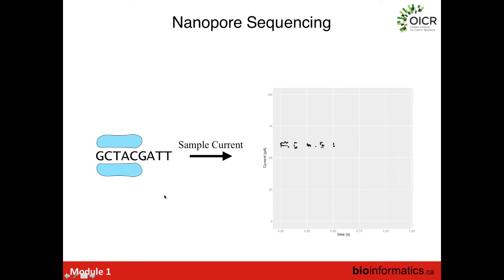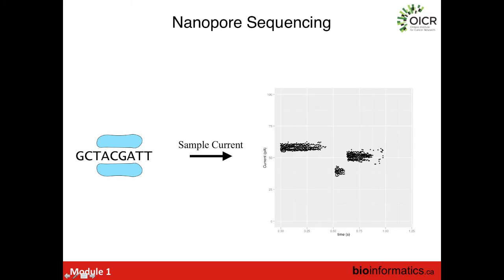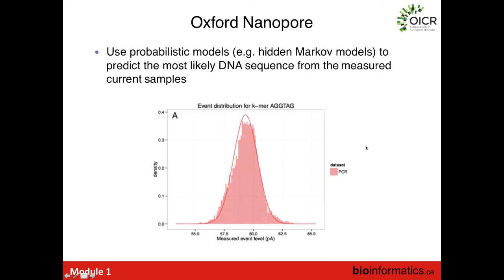At some point in time we have some sequence in the pore — say GCTAC — and we observe some current samples, around 60 picoamps. As DNA moves through the pore by a single base, the current signal changes — from 60 picoamps down to around 45 picoamps. As it moves again we see different current samples until we've read the whole DNA fragment. My group is involved in building probabilistic models of how much current we should observe depending on what the DNA sequence is in the pore. You sequence known DNA, build up a profile of how much current you observe when short fragments like AGG or TAG are in the pore, fit a Gaussian distribution, and say that when this sequence is in the pore we expect to see around 59 picoamps. We can then build probabilistic models to predict the DNA sequence from the observed current samples.